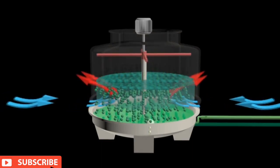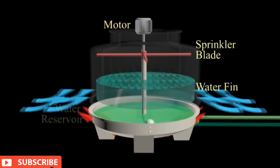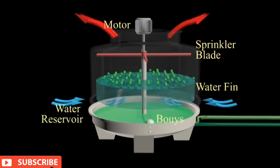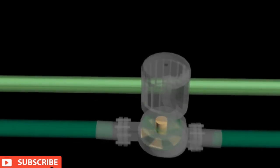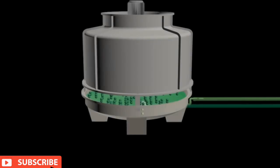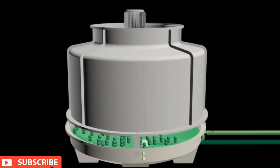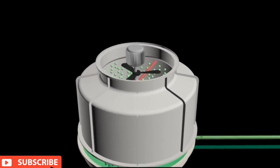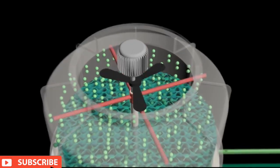The cooling tower consists of several components: motor, sprinkler blade, water fin, water reservoir, buoys, and a make-up water tank. Condenser water flows to the cooling tower with the help of centrifugal pumps, referred to as condenser water return. This condenser water passes through rotating sprinkler blades on the cooling tower, which rotate using pressure generated by the condenser water itself.